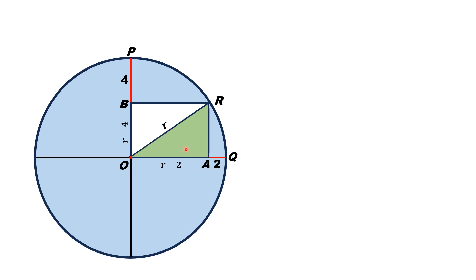If we apply the Pythagorean theorem on this right triangle, we will get r² = (r - 2)² + (r - 4)².